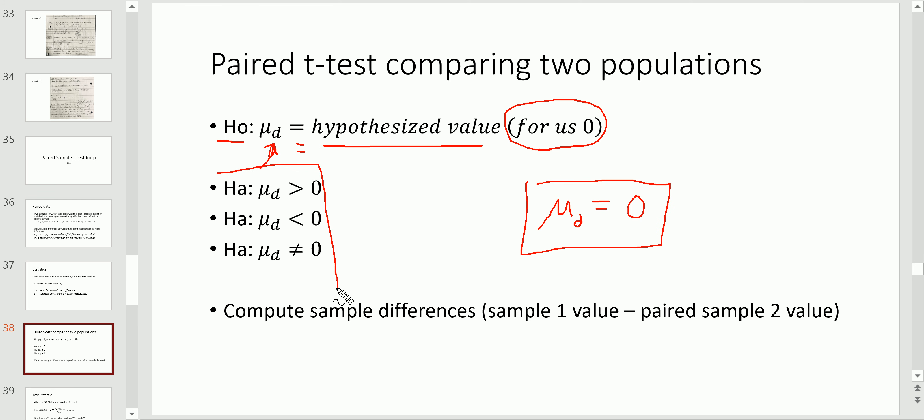Now the alternative can go one of three ways, as we're used to seeing so far. One is that the treatment increased whatever you were measuring. The treatment decreased whatever you're measuring or the treatment changed, which is more general two sided alternative.